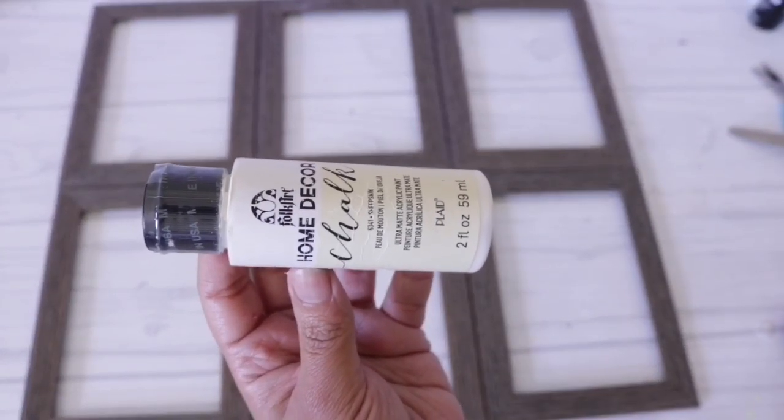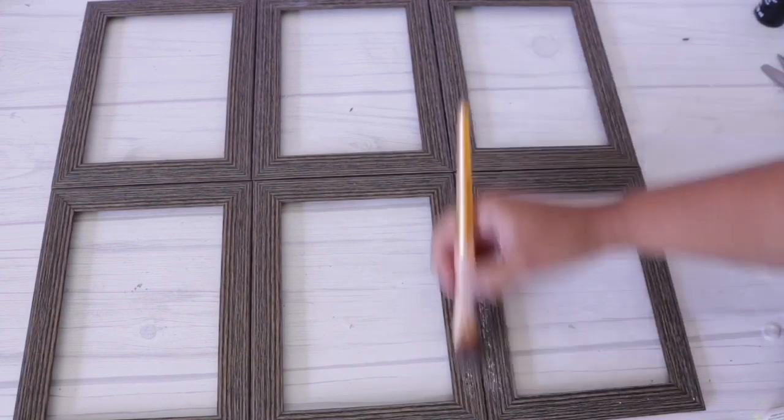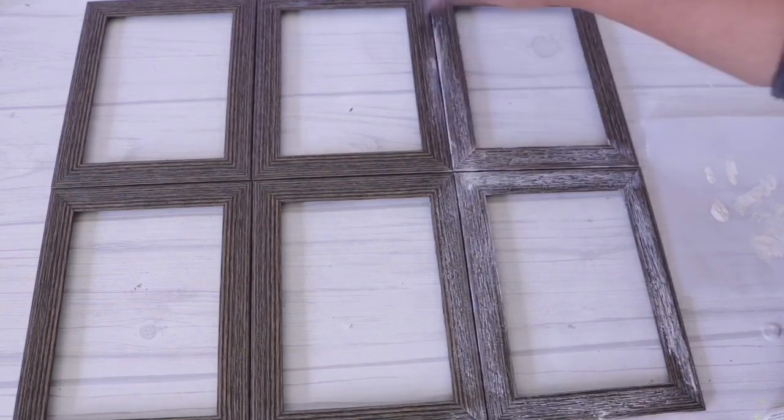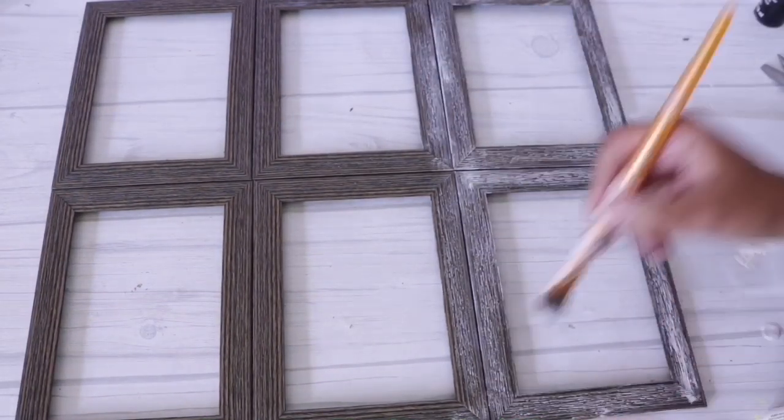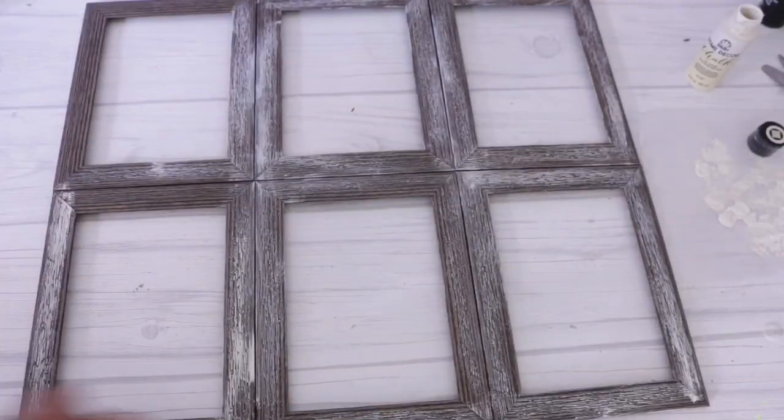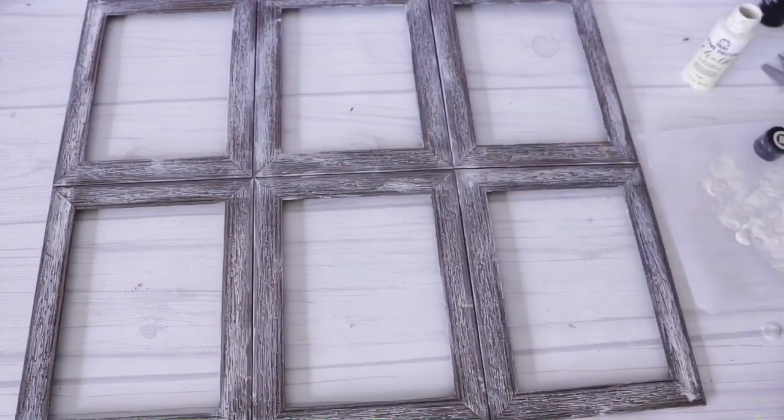Now that everything is put together, I'm going to flip it over and with some white chalk paint and a really dry brush, I'm just going to brush on some white so that it looks more like the Michaels one. You can skip this step if you like the natural wood, but I really wanted it to look like the Michaels one.